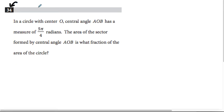Noticing this is a free response question, and it says, in a circle with center O, central angle AOB has a measure of 5π/4 radians. We're talking radians here, and the area of the sector formed by central angle AOB is what fraction of the area of the circle?